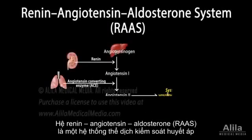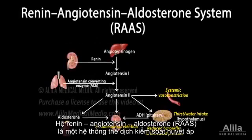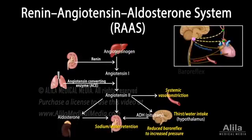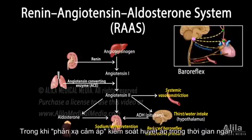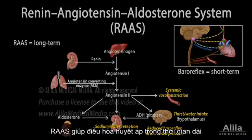The renin-angiotensin-aldosterone system, RAS, is a hormonal system that controls blood pressure. While baroreflex is a short-term response to sudden changes in blood pressure, RAS is responsible for long-term regulation.